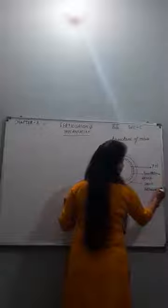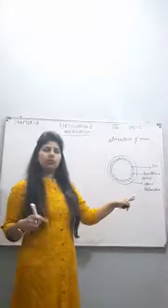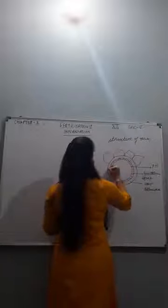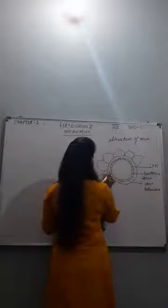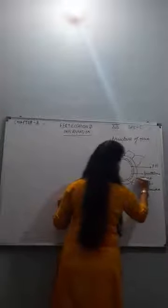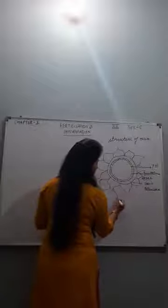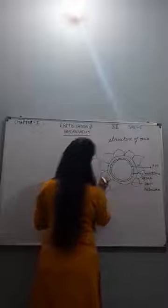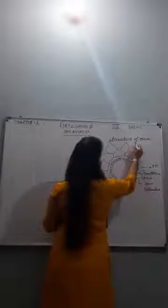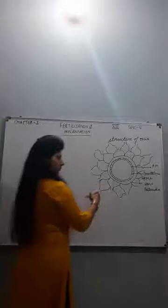Around the zona pellucida are cells known as corona radiata, because they radiate outwards. You can draw them in two or three layers radiating around the ovum.